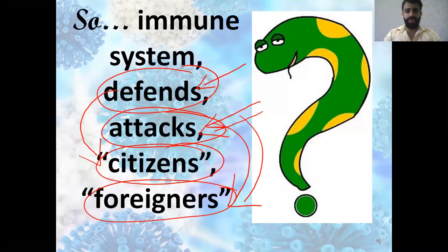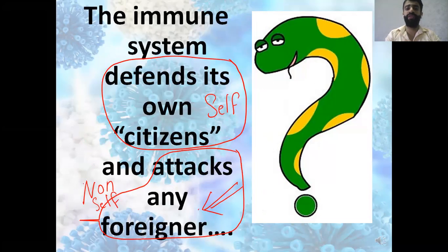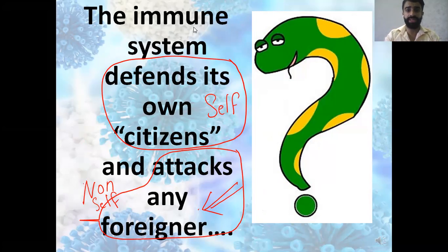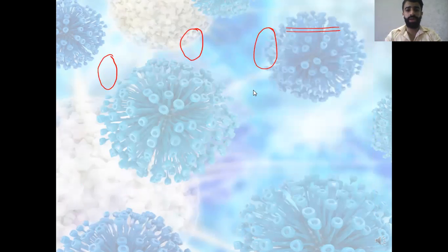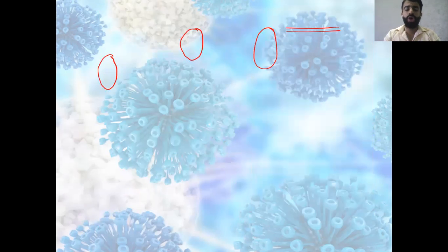The role of the immune system is to defend its own citizens, meaning its role is to defend the self and to attack any foreigners — meaning to attack the non-self. So the immune system defends the self: my lungs, my heart, my kidney, my liver, my stomach, and it will attack any foreigners like bacteria, parasites, and viruses outside the body.